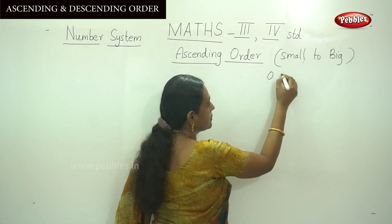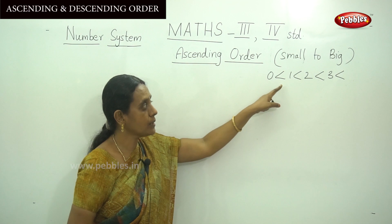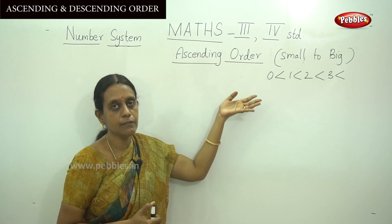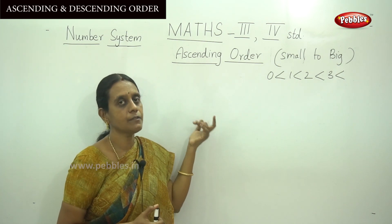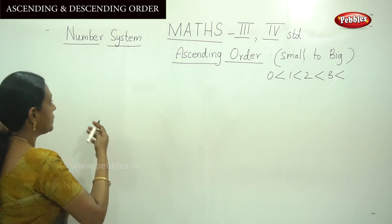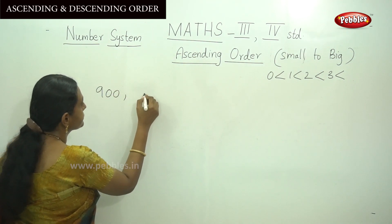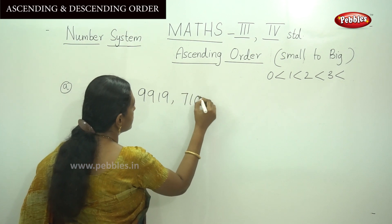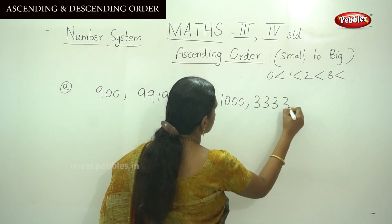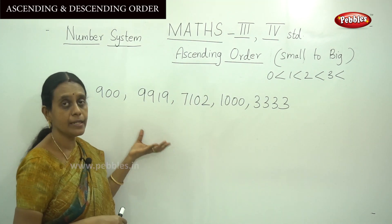Starting from 0, 1, 2, like that up to 9 — that is small to big. You can understand this because you are in 3rd or 4th standard and we have revised this from your 2nd and 1st standard portion. Let me do one example sum to show how to arrange numbers in ascending order. Here there are 5 numbers but varied in digits.